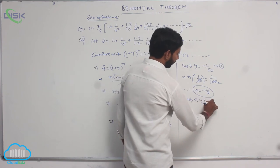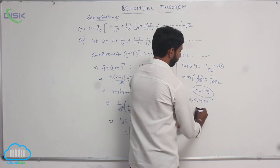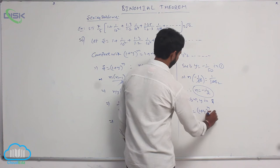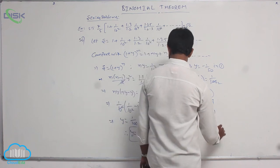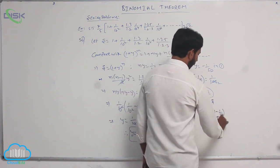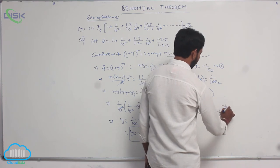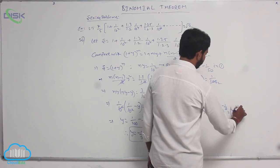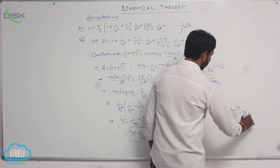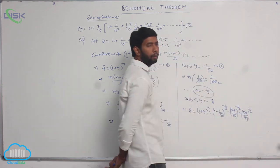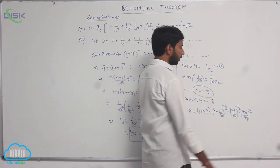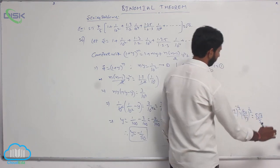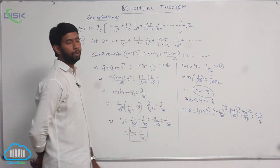Substituting n and y into S: S = (1 + y)ⁿ = (1 - 1/50)^(-1/2) = (49/50)^(-1/2) = (50/49)^(1/2). This equals √(50/49), which simplifies to 5√2/7.